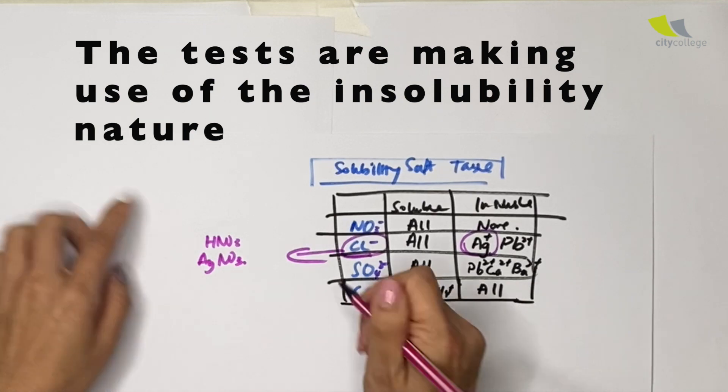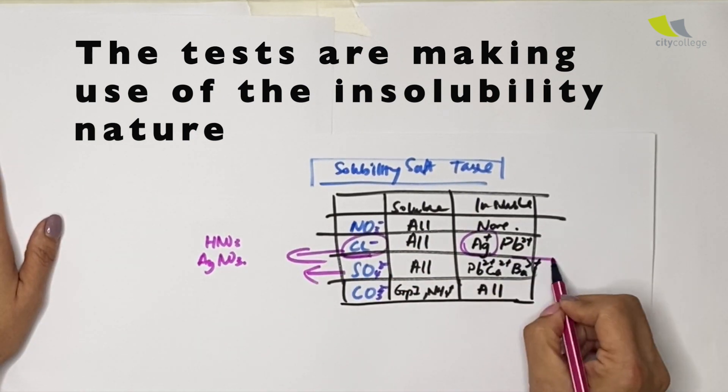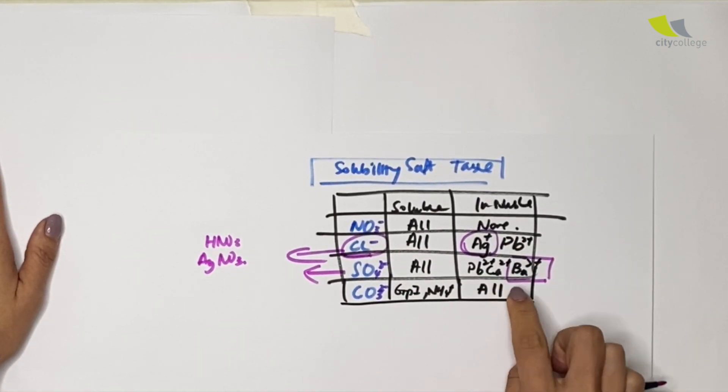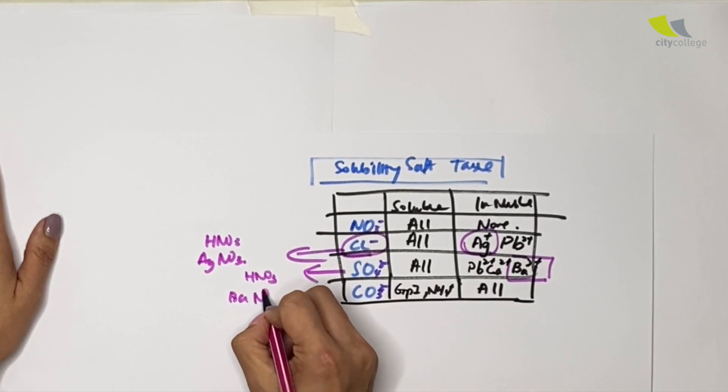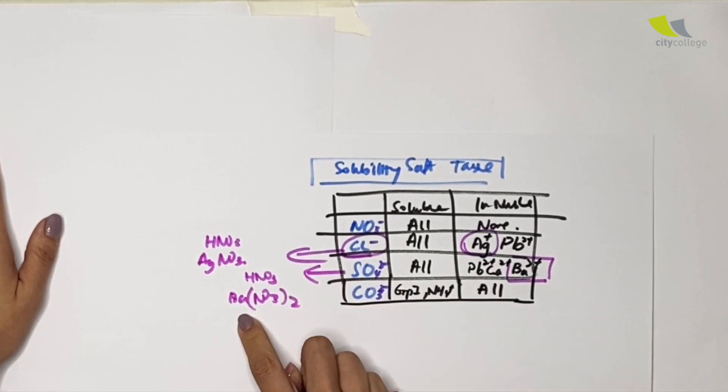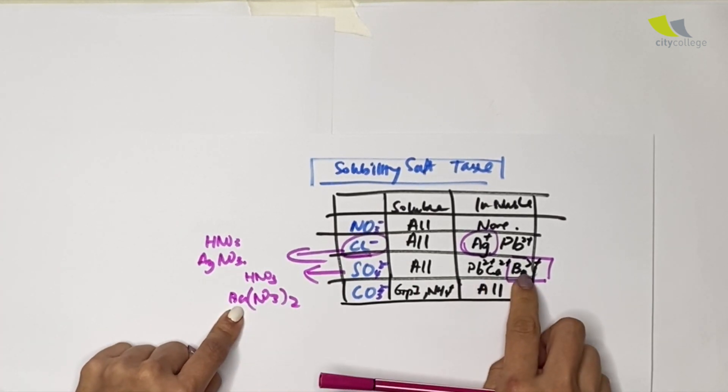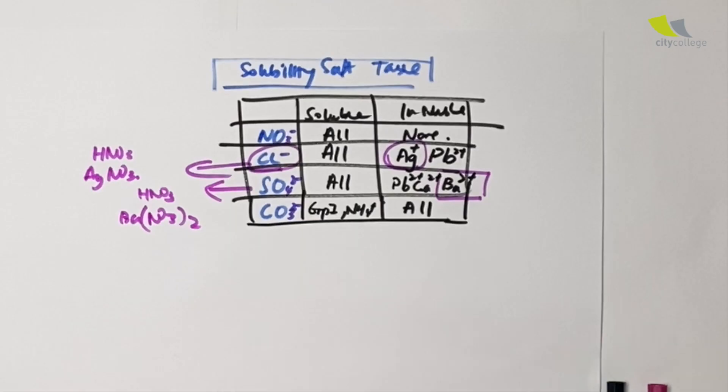How about sulfate then? Sulfate, another one that they always use is barium. So nitric acid followed by barium nitrate. So next time when you see barium nitrate or barium been used, you know that they are testing for sulfate.